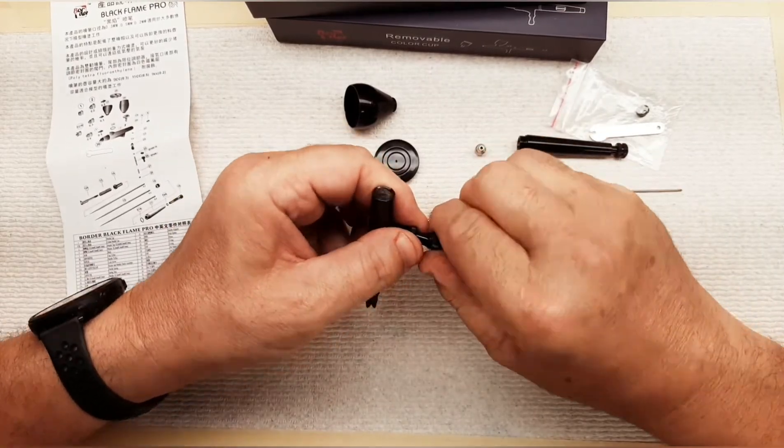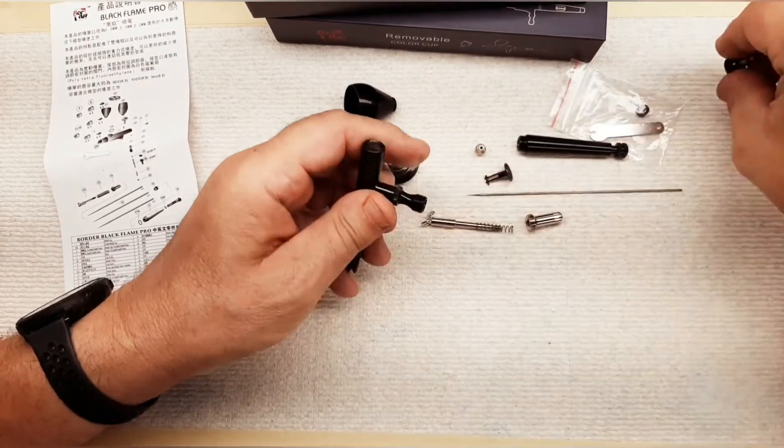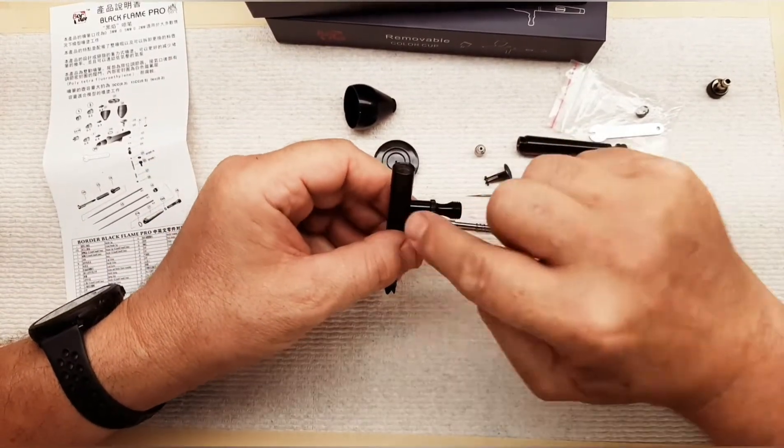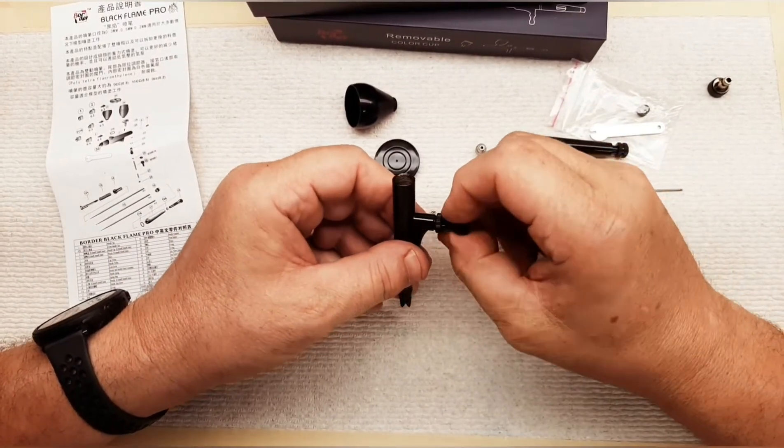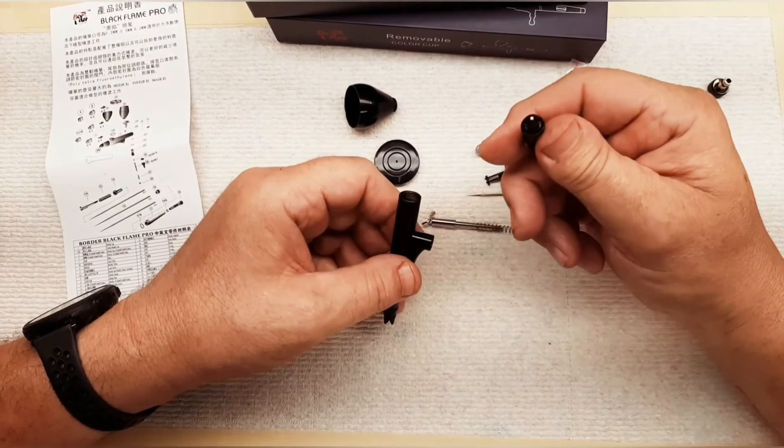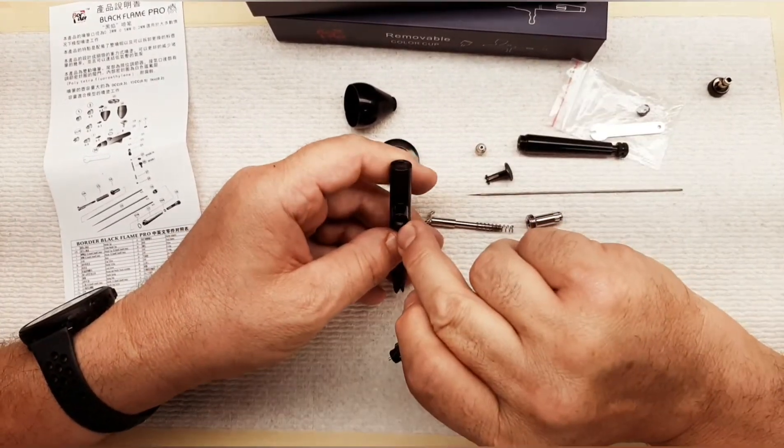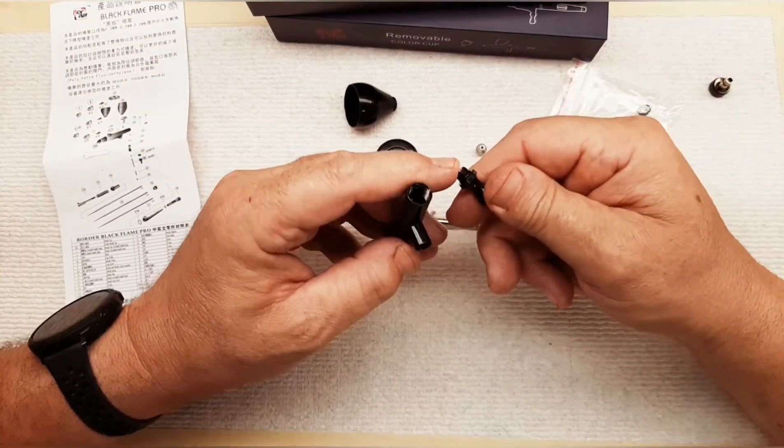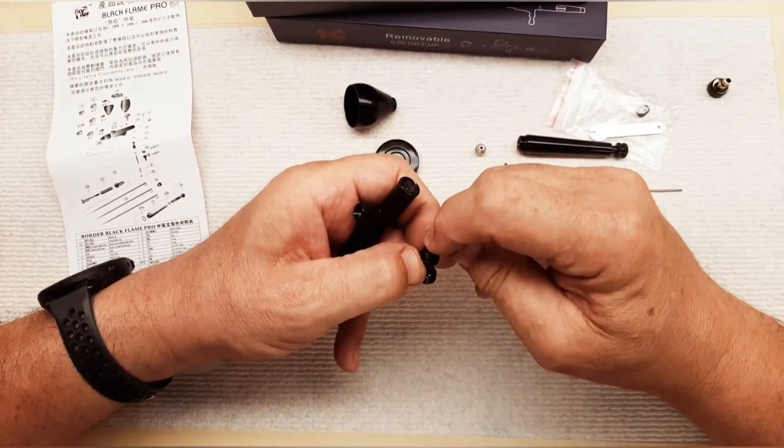The other thing I like about this is, here's your tip it comes with. In the Iwata, you can't clean any of this. In this one, you can unscrew this. There's your tip. Now you can get to all this in there where the paint might get into, and you can clean it, and you don't have to take anything apart. Here's your plunger for your airflow.